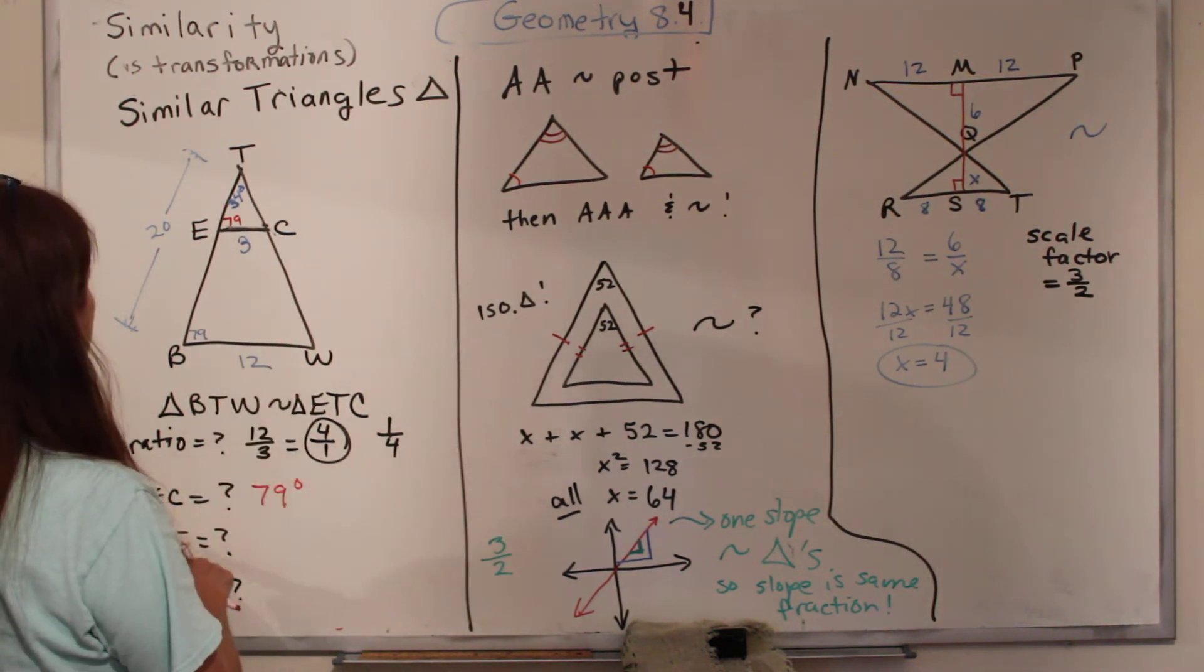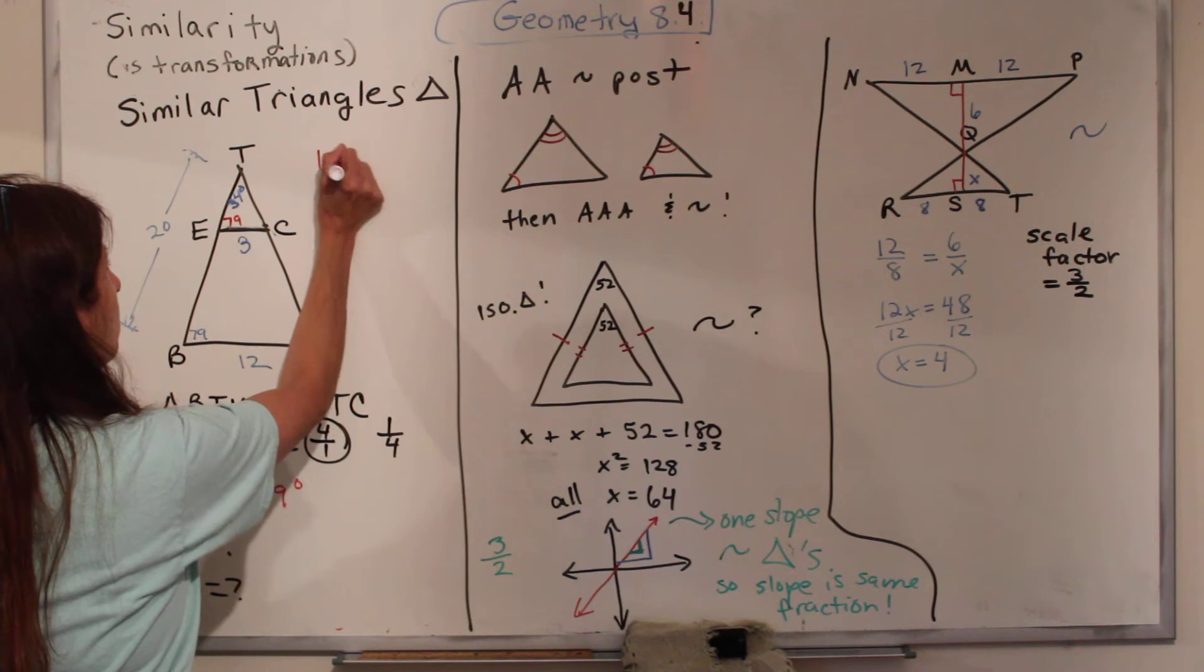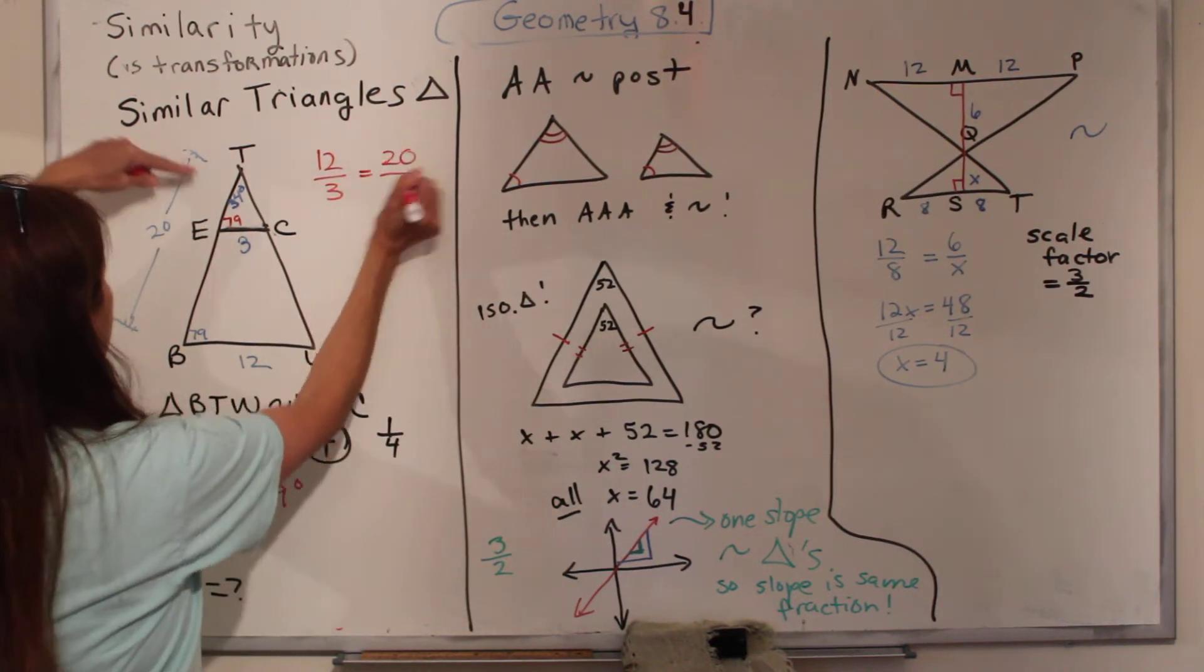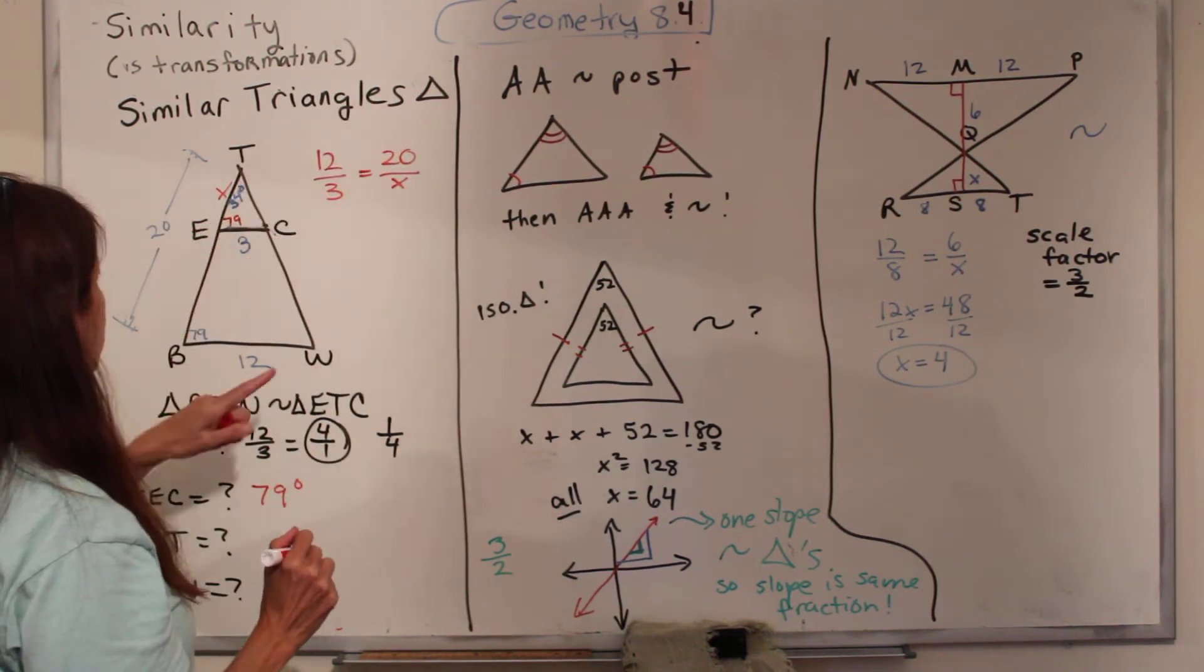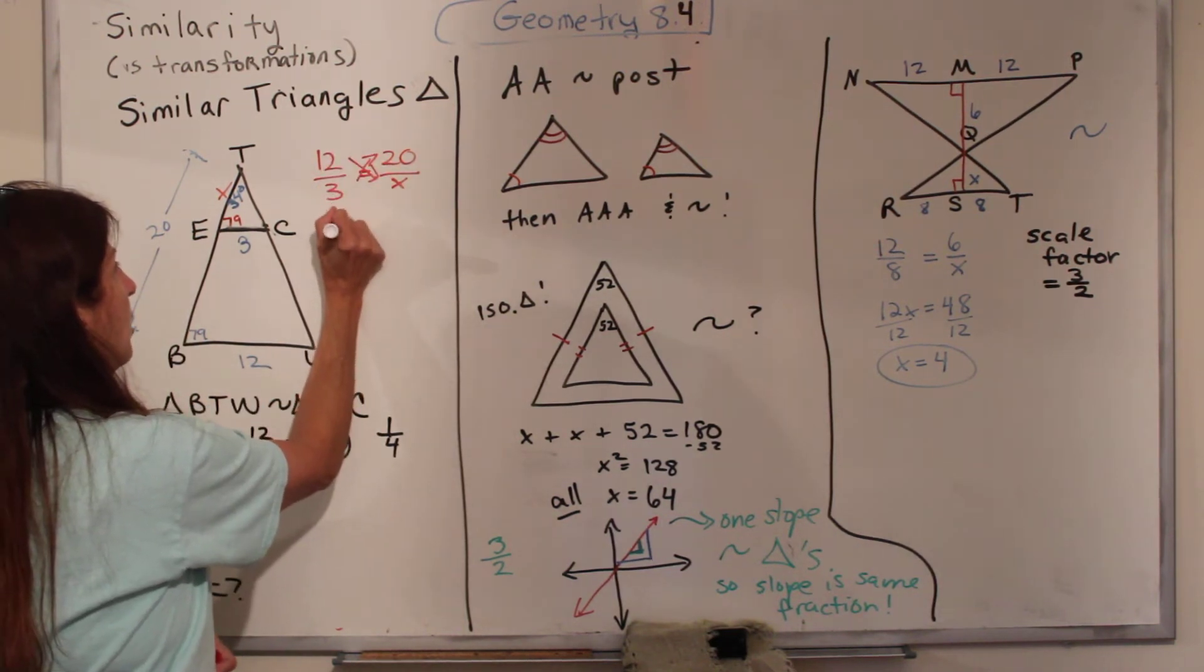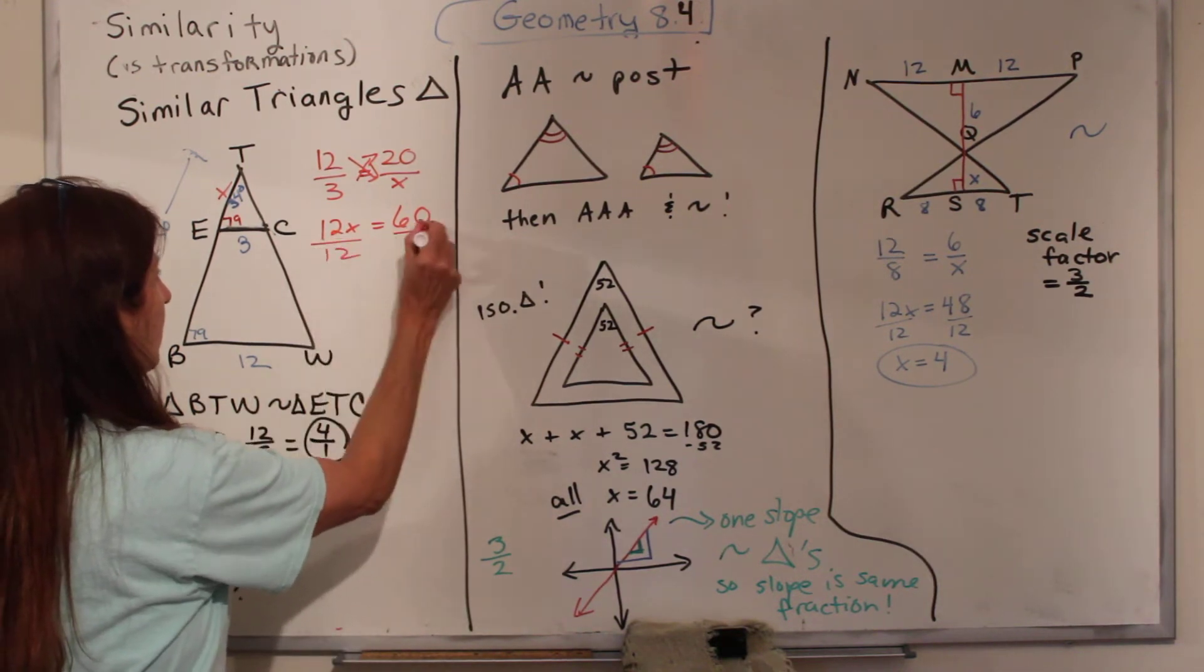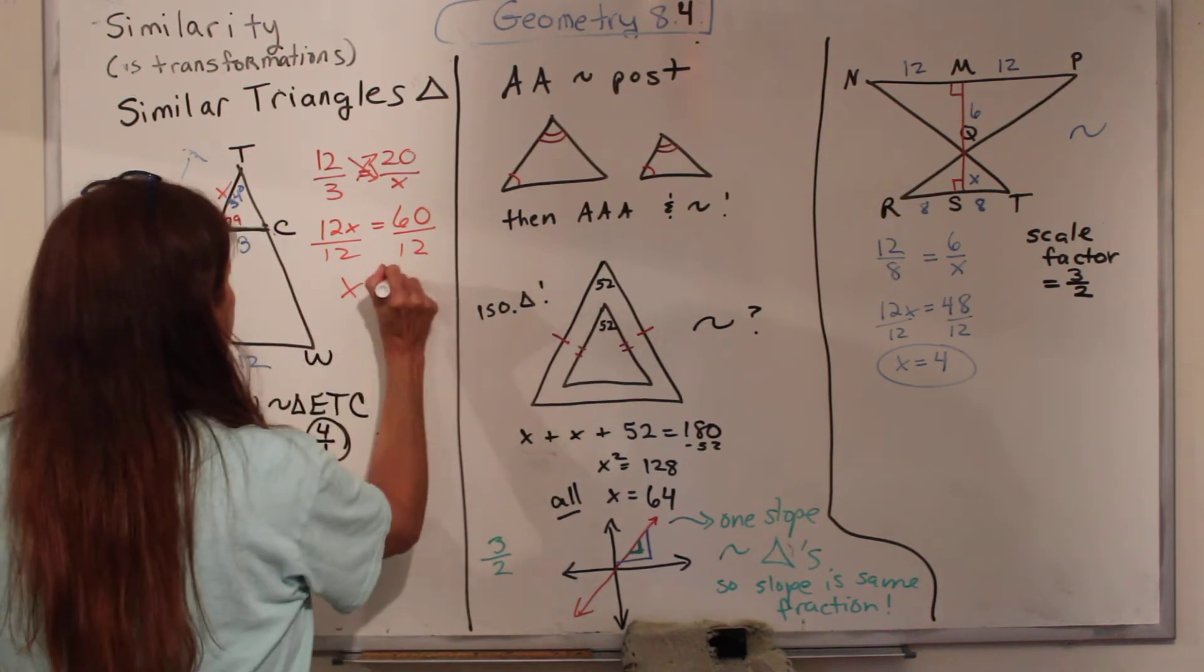Now, what about the length of ET? Well, we can figure that out, because we know that 12 is to 3, the big one is to the little one, as 20 is to our unknown X. These are the big triangles, these are the little triangles, and we cross multiply, and we can solve for X. So we have 12X equals 60, and then we are going to divide by 12, divide by 12. I really don't like writing with red here, but it's 5.